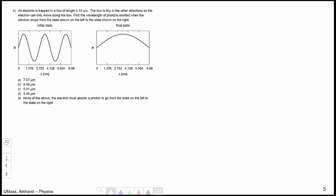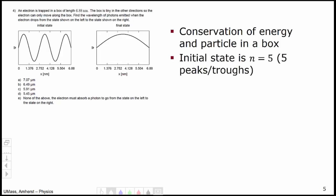Question number 4 dealt with a particle in a box going to a lower energy state. This was essentially conservation of energy and particle in a box and a little bit of moving around the quantum map. It really synthesized everything we talked about in our first unit into one problem. The initial state is n equals 5. We see that there are 5 peaks or troughs in the picture. The final state is n equals 1.